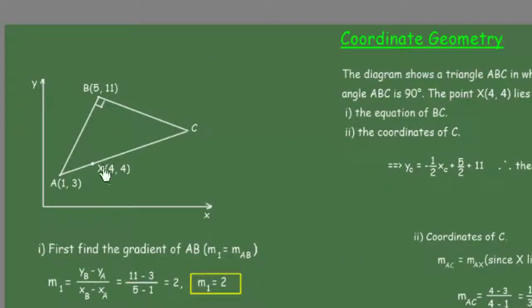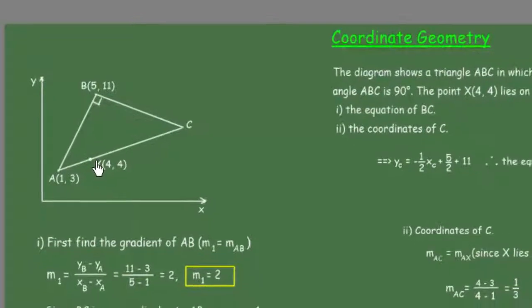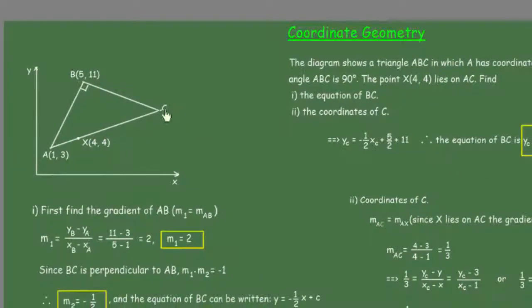The point X lies on AC. We're going to find the equation of BC and the coordinates of point C.